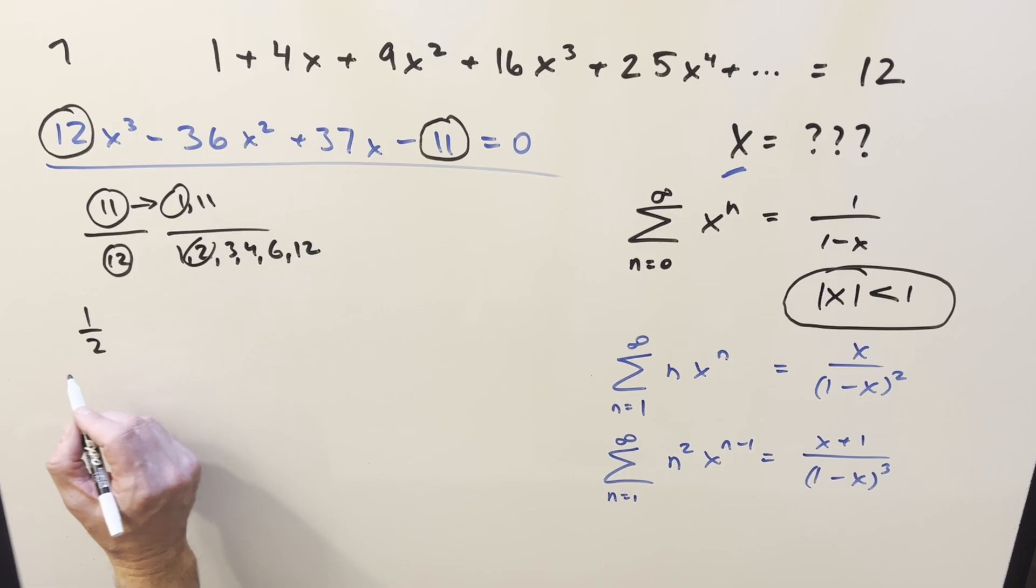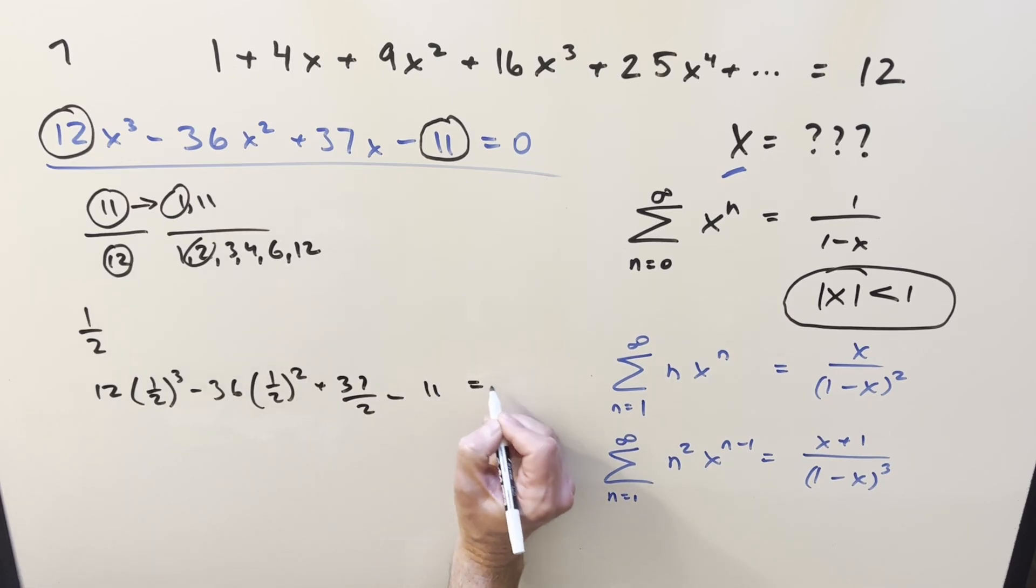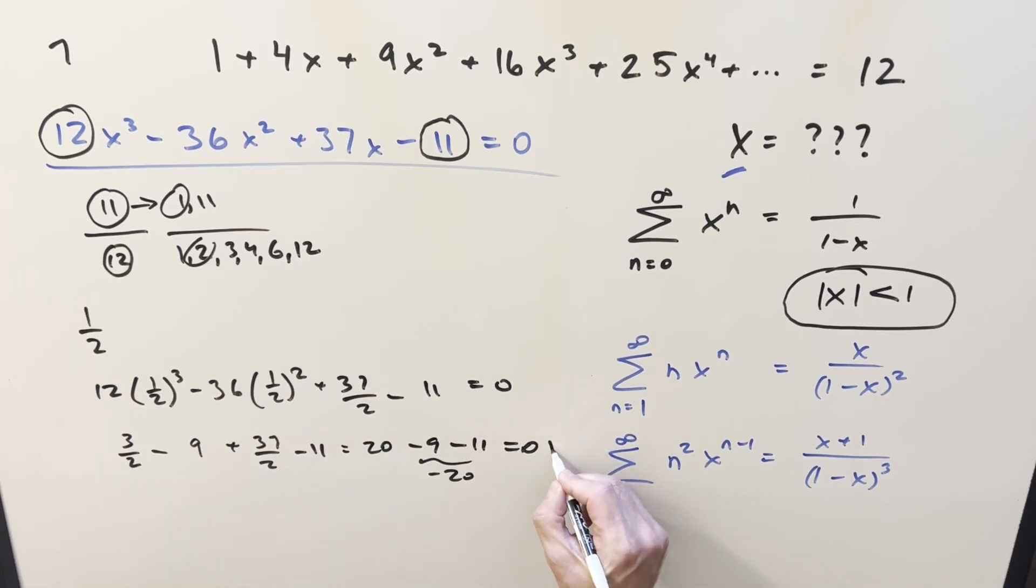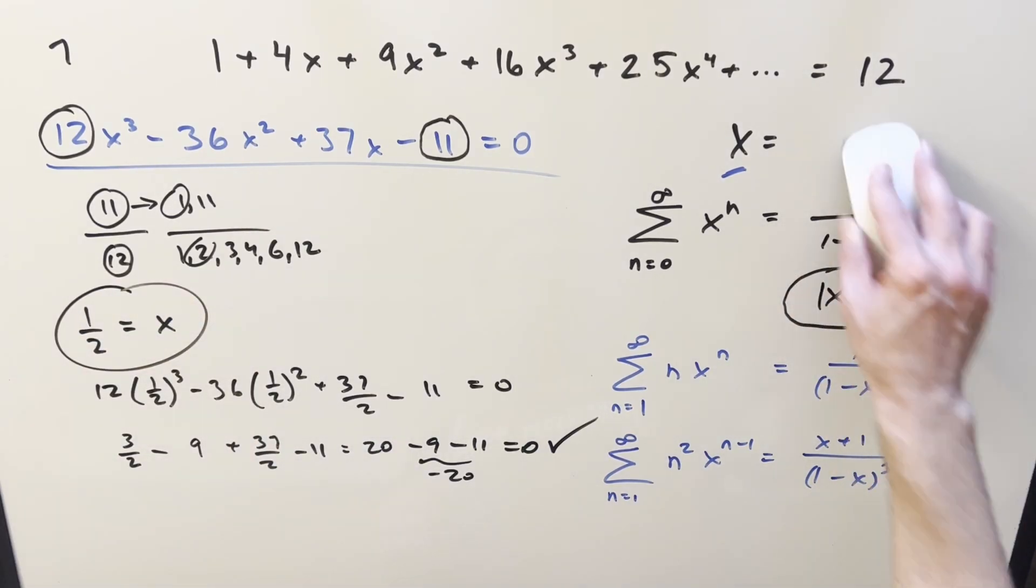And that's convenient. So if we plug half into this polynomial, we get 12 times 1 half cubed minus 36 times 1 half squared plus 37 over 2 minus 11 equal to 0. This first part becomes 12 over 8, or 3 over 2, minus 36 over 4 is a minus 9, 37 over 2 minus 11. 37 over 2 plus 3 over 2, that's going to be 40 over 2, or 20. Minus 9 minus 11 is minus 20, and this equals 0. So pretty convenient. Our first try works, and so we have a value here of x equal to 1 half.